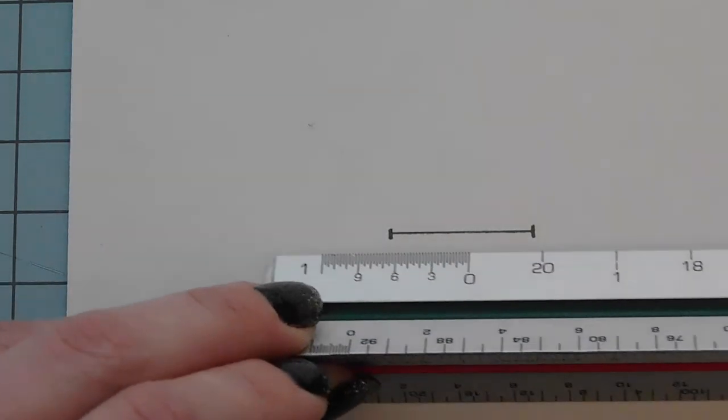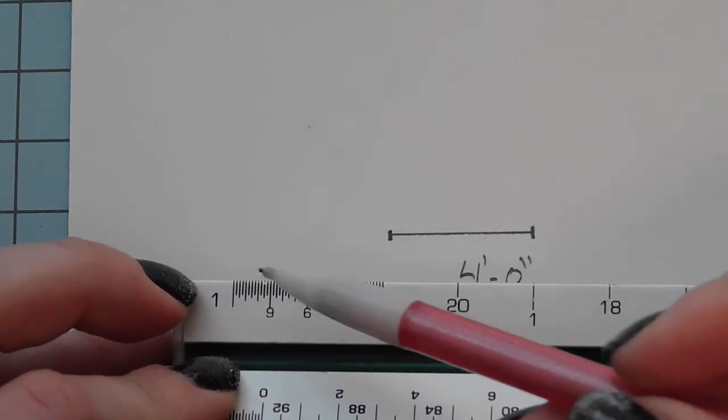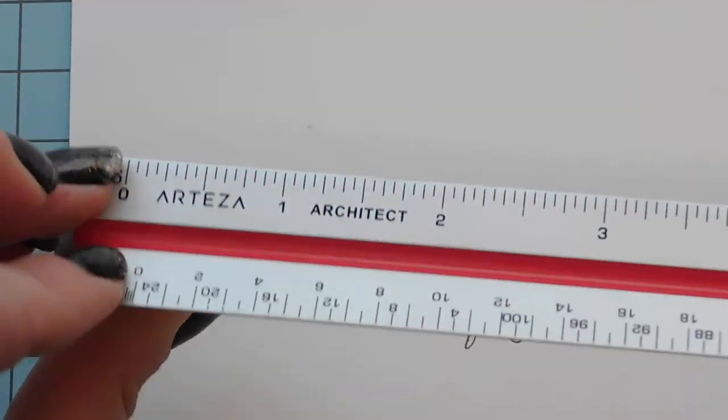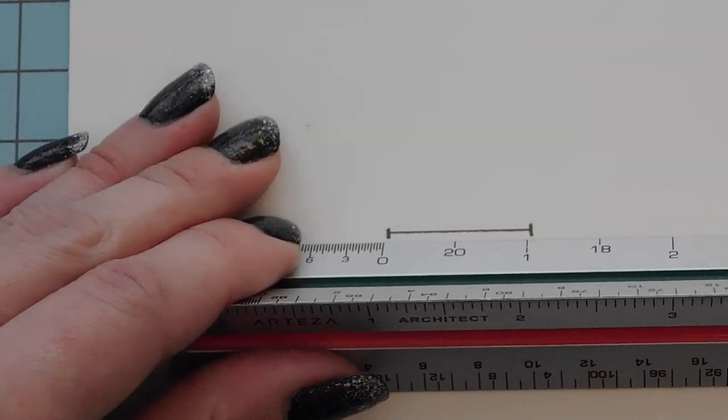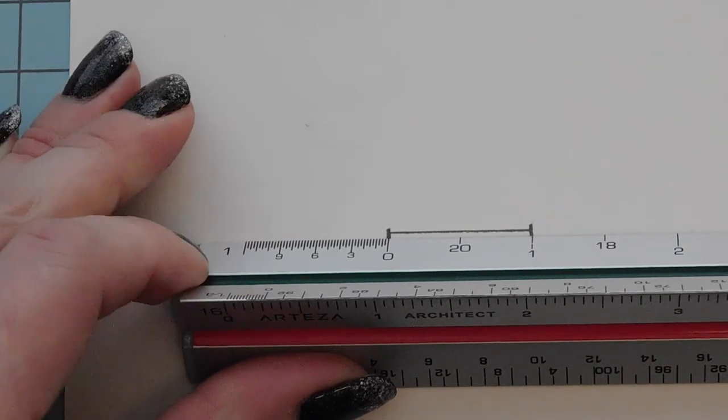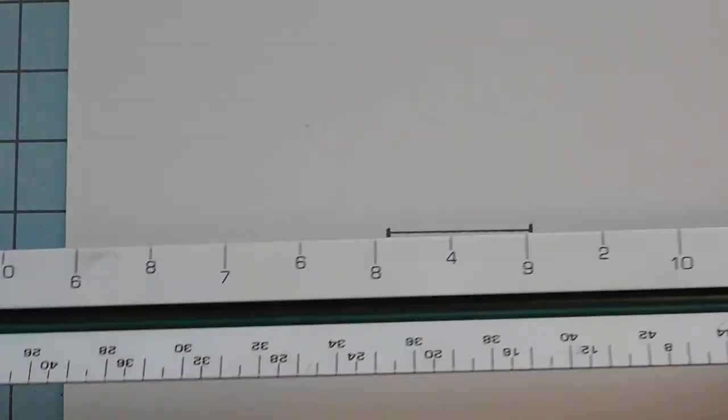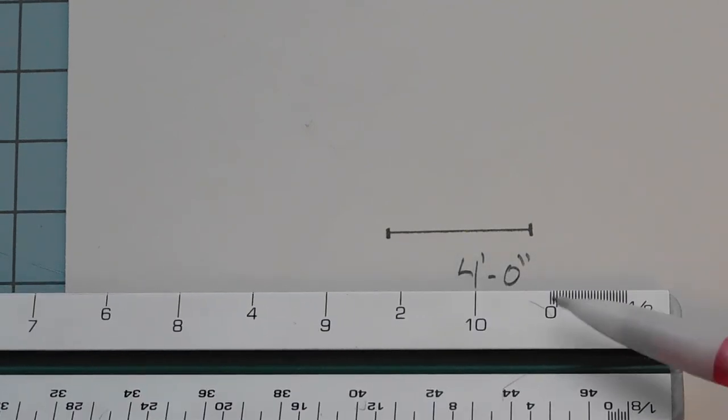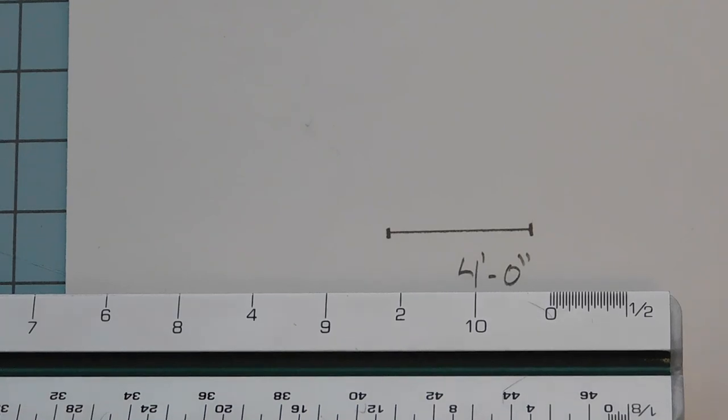Same thing applies for any of the other scales. So this one is one inch scale, which should look pretty similar to our real ruler here. But either way, I could just set this down and know that this is one foot in the one inch scale. So like I said, it works the same way for every single scale, just as long as you're always starting with that zero, you can always figure out what that will be in any different scale.